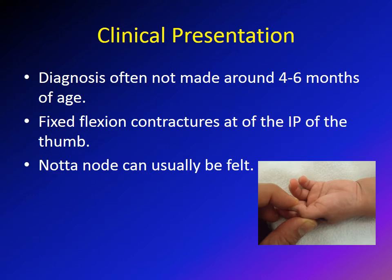The diagnosis is usually not done at birth — it is typically done around the age of four to six months. Sometimes parents present later. The hallmark of the condition is a flexed position of the interphalangeal joint of the thumb. As you can see in this picture, this patient has a flexion contracture. I am trying very hard to extend the thumb but cannot because of the flexion contracture.